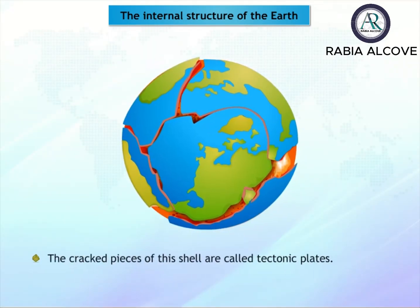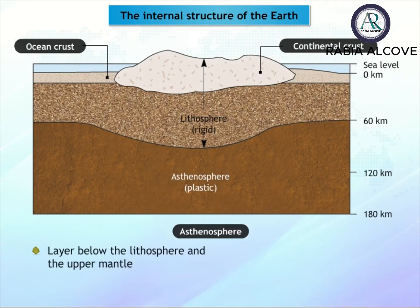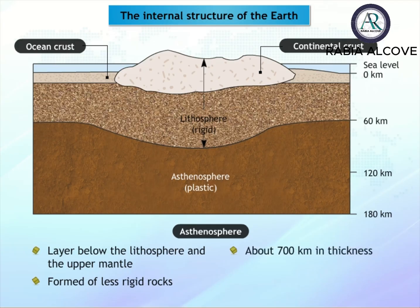The layer of the Earth below the lithosphere and the upper mantle is called the asthenosphere. The asthenosphere is formed of less rigid rocks than the lithosphere and is about 700 kilometers in thickness.